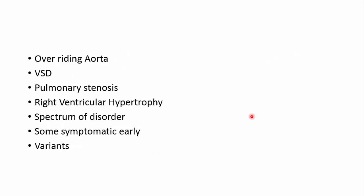So just to recap, the features of Tetralogy of Fallot are: aortic override, ventricular septal defect, infundibular pulmonic stenosis, and right ventricular hypertrophy.